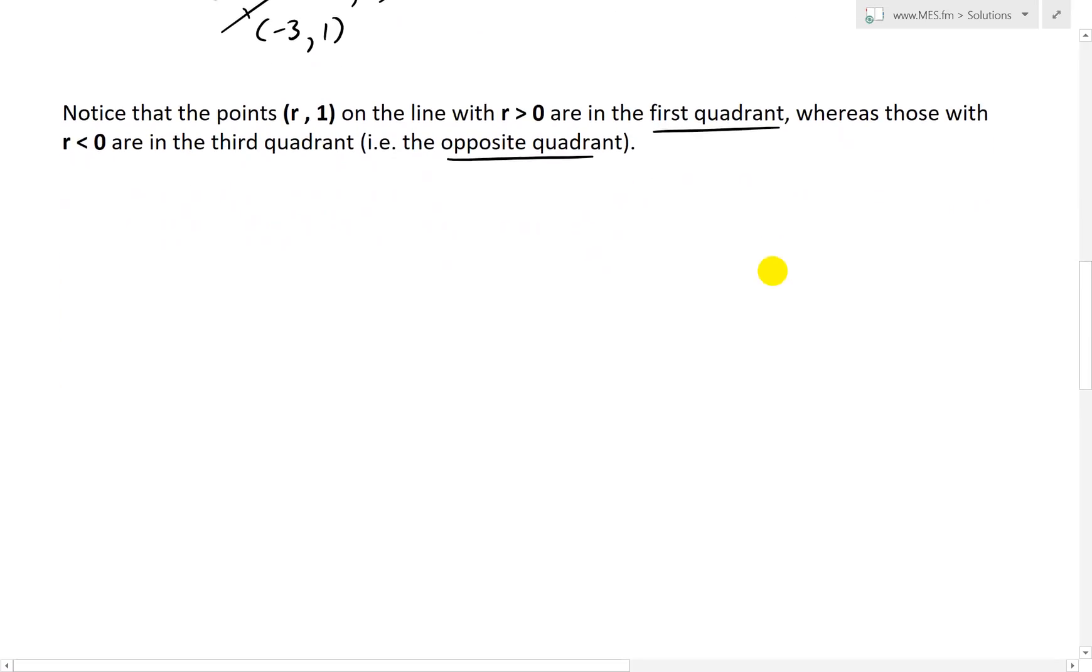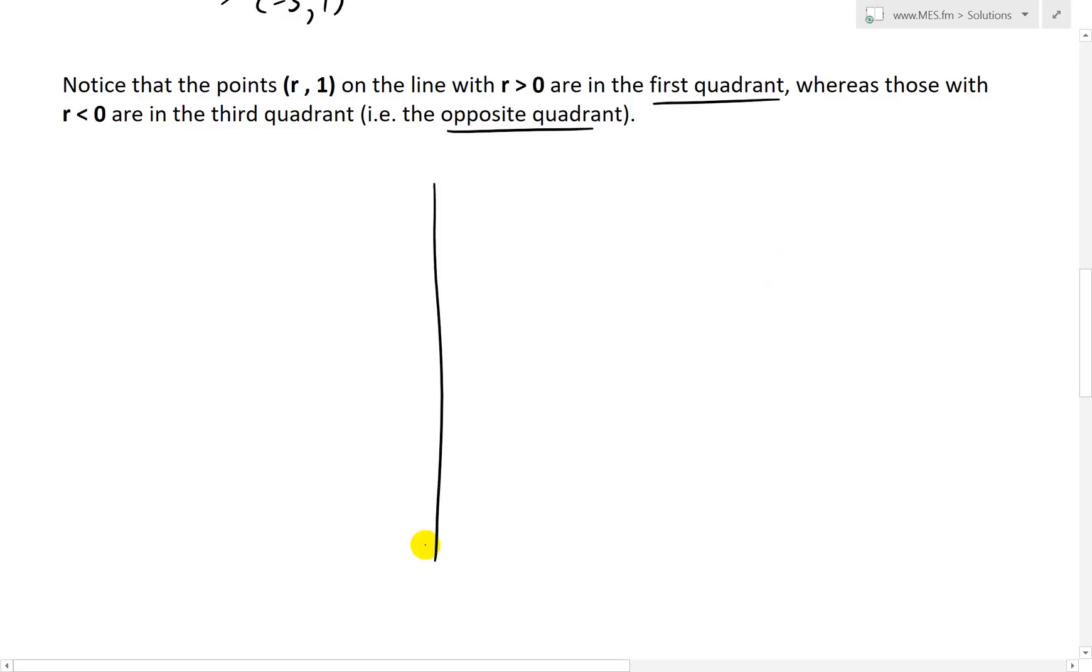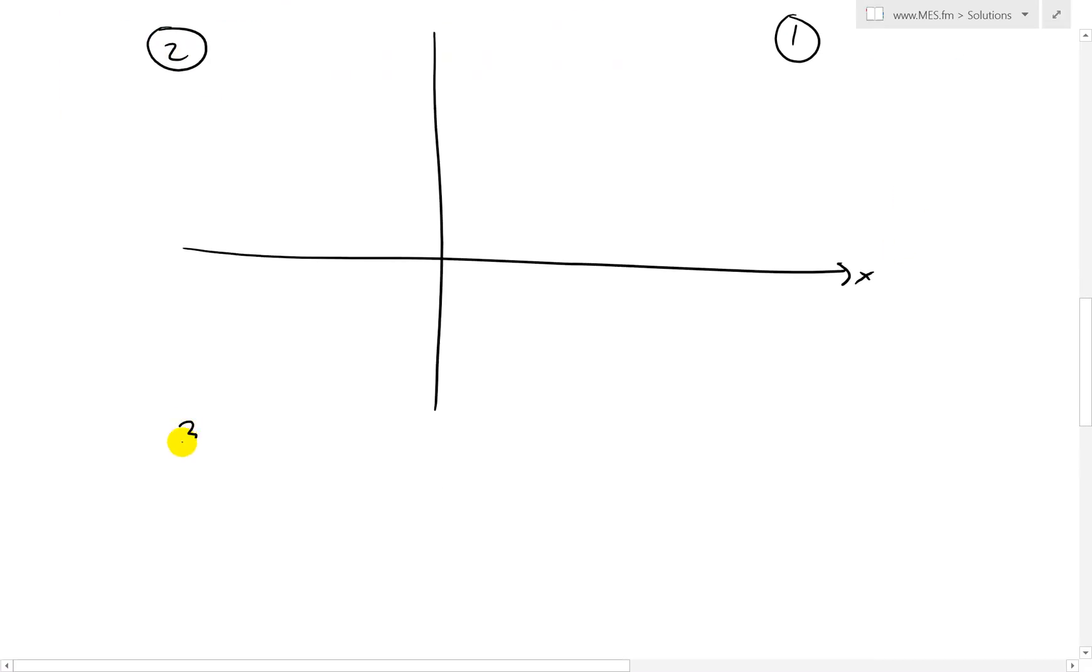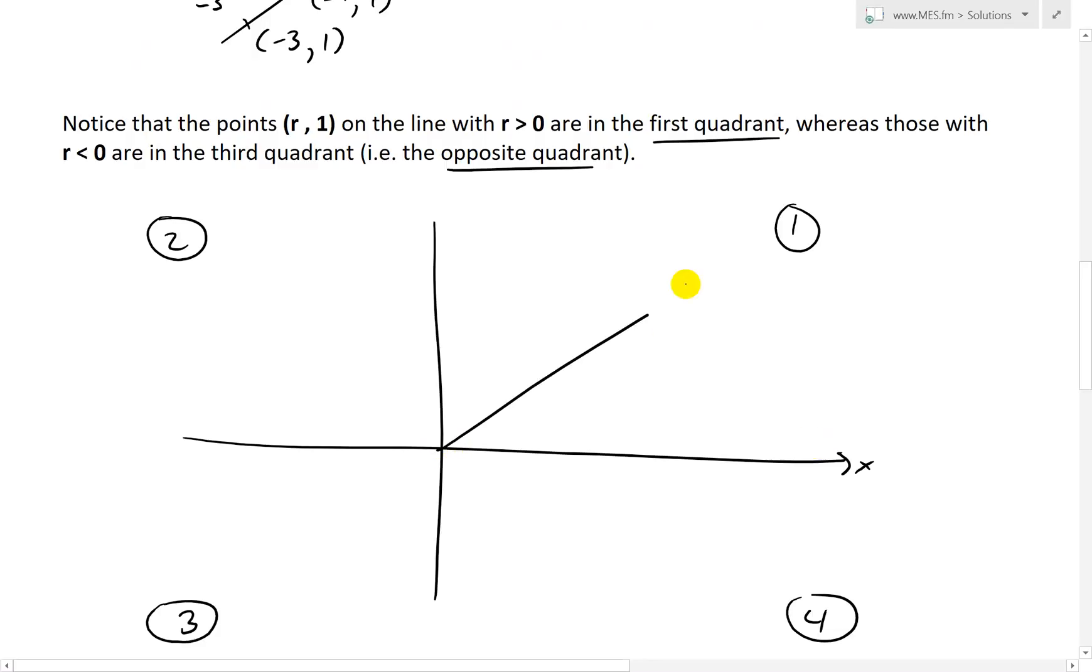Just to clarify further, let's say we had curves like this. Let's say this is our x. And this is just to represent the quadrant. Remember, quadrants are, you have 4 like this. This is 1, this is 2, and this is 3, and this is 4.